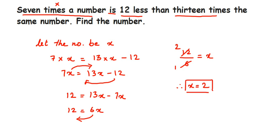I hope this is clear. If you have any doubts, drop a comment. You can also cross-check by substituting x = 2 into the equation 7x = 13x − 12 and verifying that the LHS and RHS are equal. If they're equal, your answer is correct; if not, recheck your steps. Thank you so much for watching!